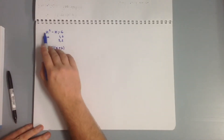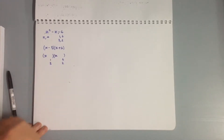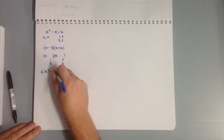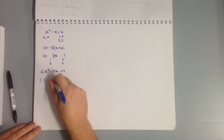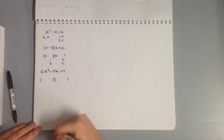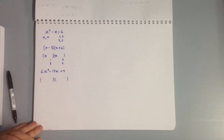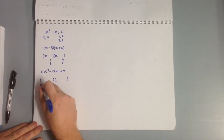It gets more complicated when we have coefficients of x². They can be a bit more of a problem. For worked example 1b, we're going to factorize 6x² - 17x + 7. The problem here is we've got lots of options for our brackets. The factors of 6x² could be 6x and x, or 3x and 2x.